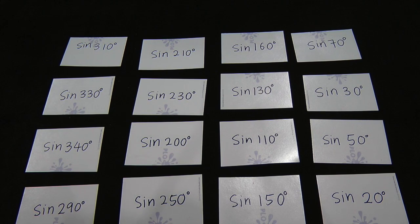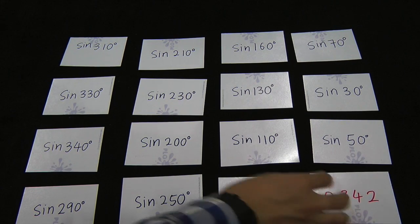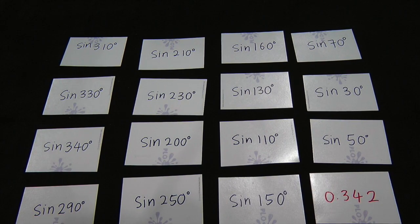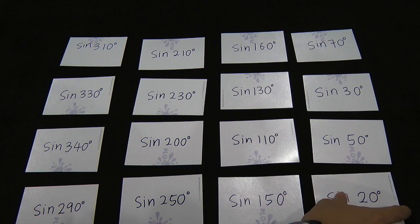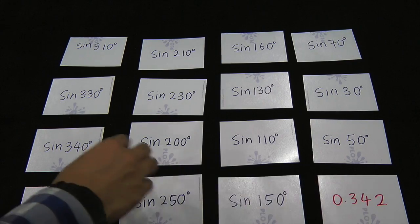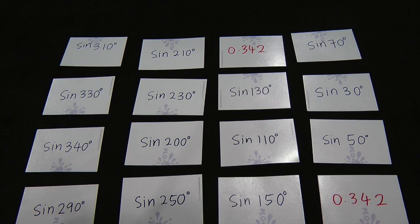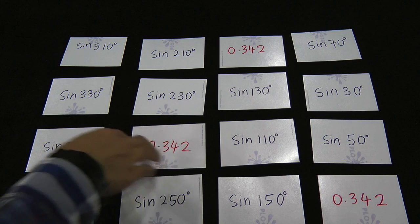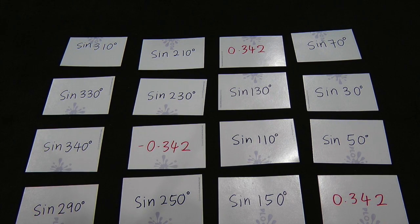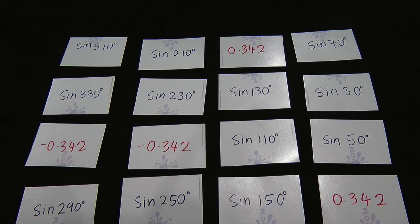If you still can't understand, let's try another example. Sine 20 is 0.342. In the second quadrant, use 180 minus 20, so sine 160 gives the same value. In the third quadrant, 180 plus 20 gives sine 200, which gives the same value but negative. And in the last quadrant, 360 minus 20 gives sine 340, again the same value.